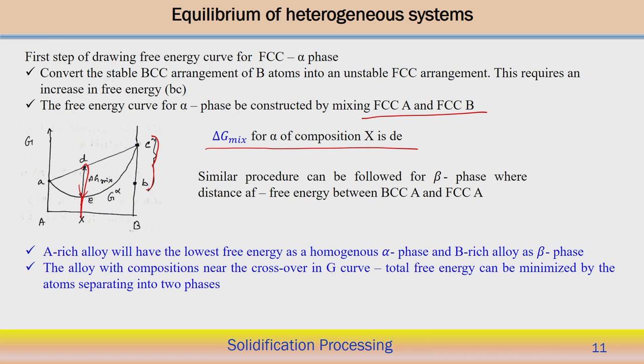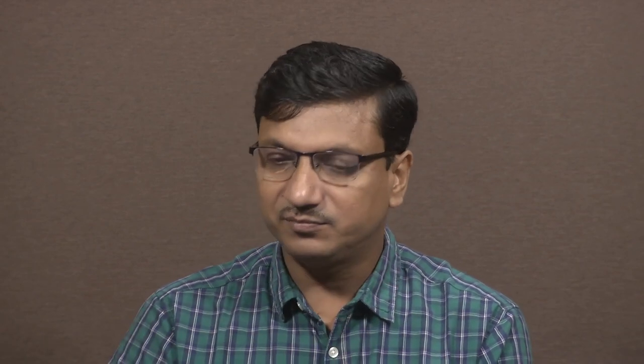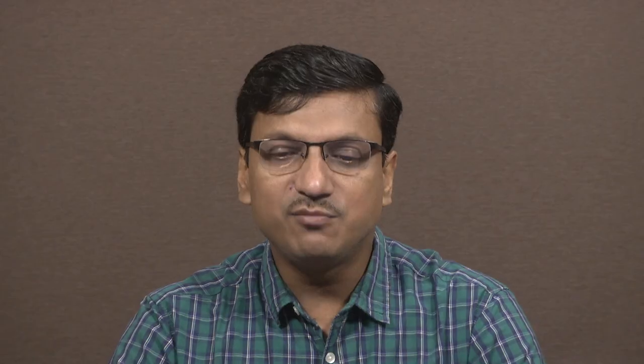Therefore, we can say that A-rich alloy will have the lowest free energy as a homogeneous alpha phase, and a B-rich alloy as a beta phase. Now, for an alloy with composition near the crossover in the G curve, the total energy can be minimized by atoms separating into two phases. At any point, the total free energy will be minimized if we separate the atoms into the two different phases, and based on that we can estimate the free energy for a given composition from the G curve. That is all for the equilibrium of the heterogeneous system.